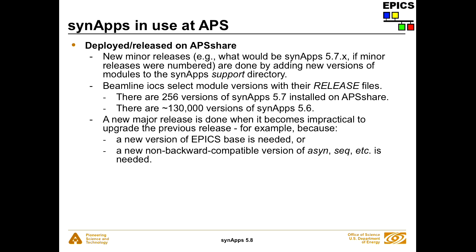As Synapse is used at APS: it's installed on a master copy called APS share, and read-only copies are sent out to all the beamlines, so everybody has their own copy identical to the master. New minor releases are done by the beamline controls group — they add a new version of the motor module or autosave or whatever. There are currently 256 versions of Synapse 5.7 installed on APS share right now, from eight upgrades and all the possible module combinations. We don't number minor releases — there are effectively 130,000 versions of Synapse 5.6 given all possible module combinations. But everybody just says 'I'm running Synapse 5.7,' and when you need to know the actual version of a particular module, you look at the release file to find the complement of all module versions someone is actually running.